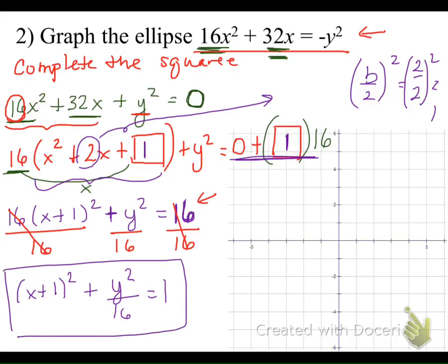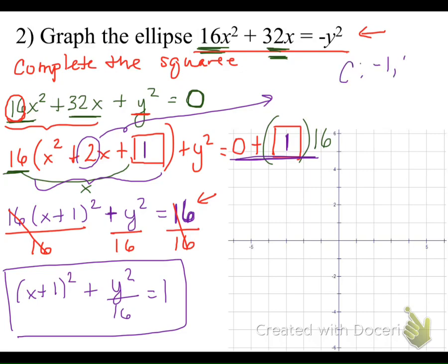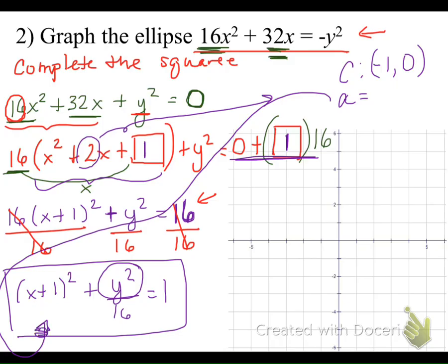Now we find the center, horizontal distance, and vertical distance for graphing. Our center is at (-1, 0) — by now you should recognize that when we just have x² or y², the value being subtracted is 0. The horizontal distance is the number in the denominator under x², and since we don't see it divided by anything, it's an understood 1. The vertical distance is the number under the y² term — we take the square root of 16, giving a vertical distance of 4.